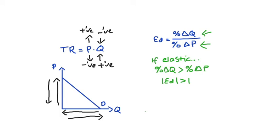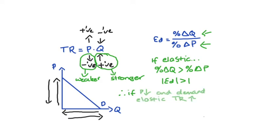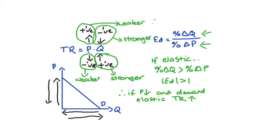Let's think about what happens to total revenue when price changes if our demand is elastic. If we had a price decrease, there will be some negative pressure on total revenue from that price change, but if demand is elastic this effect is quite weak compared to the positive effect of the increase in quantity demanded, which is proportionately larger. So total revenue will overall increase. If we had a price increase, it is the quantity effect that is dominant — the quantity decreases, this negative effect is stronger, and overall we get a decrease in total revenue.